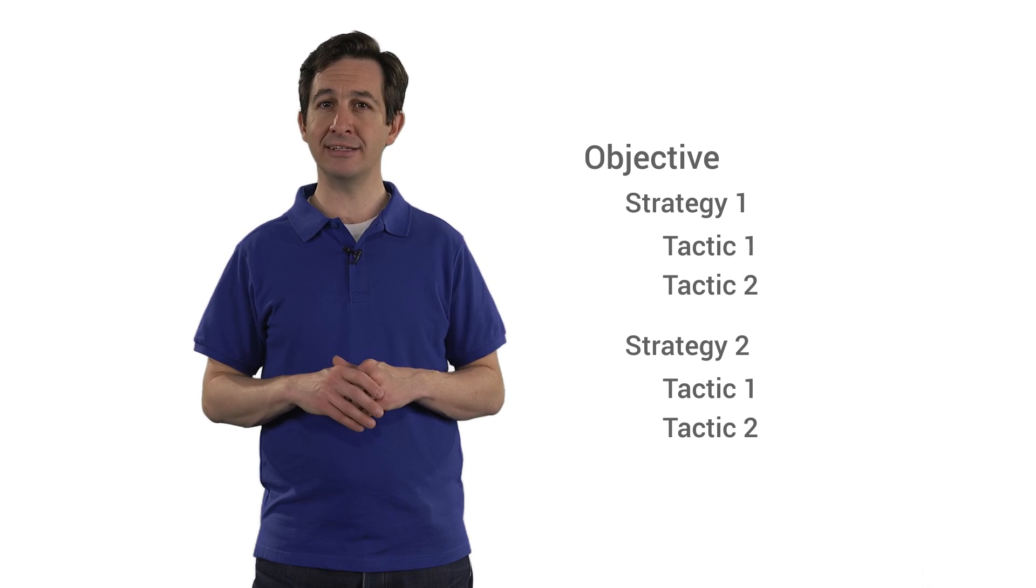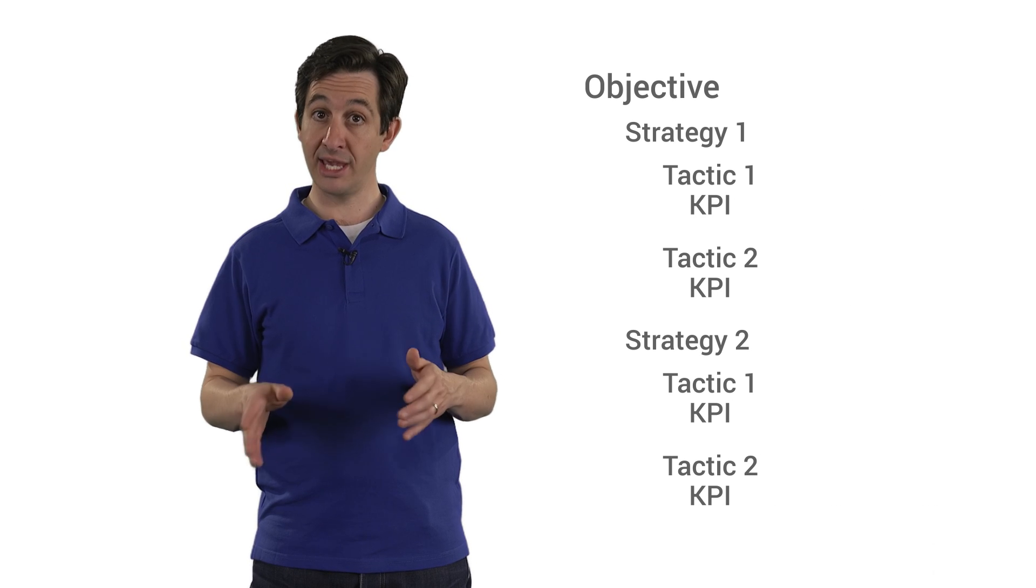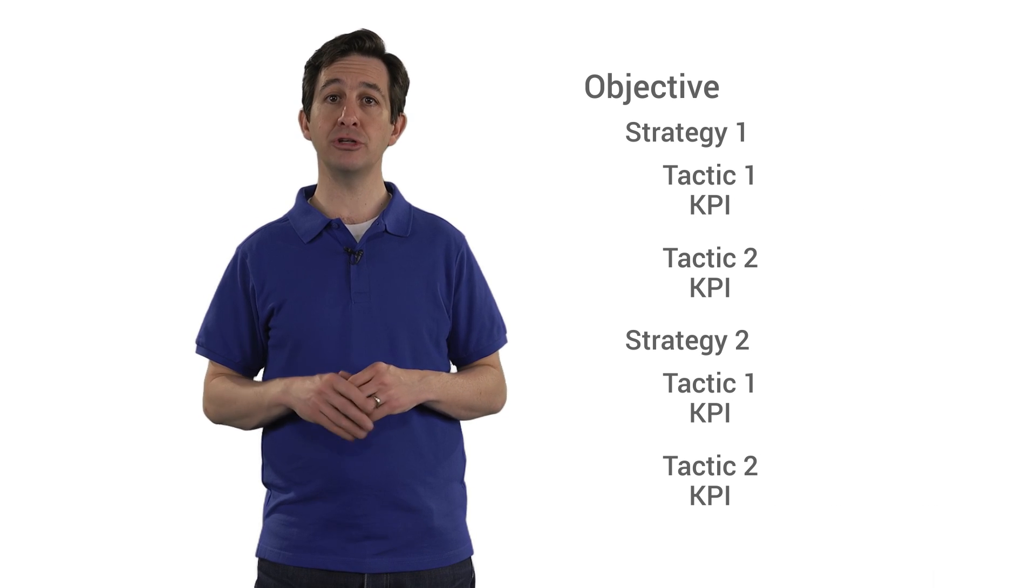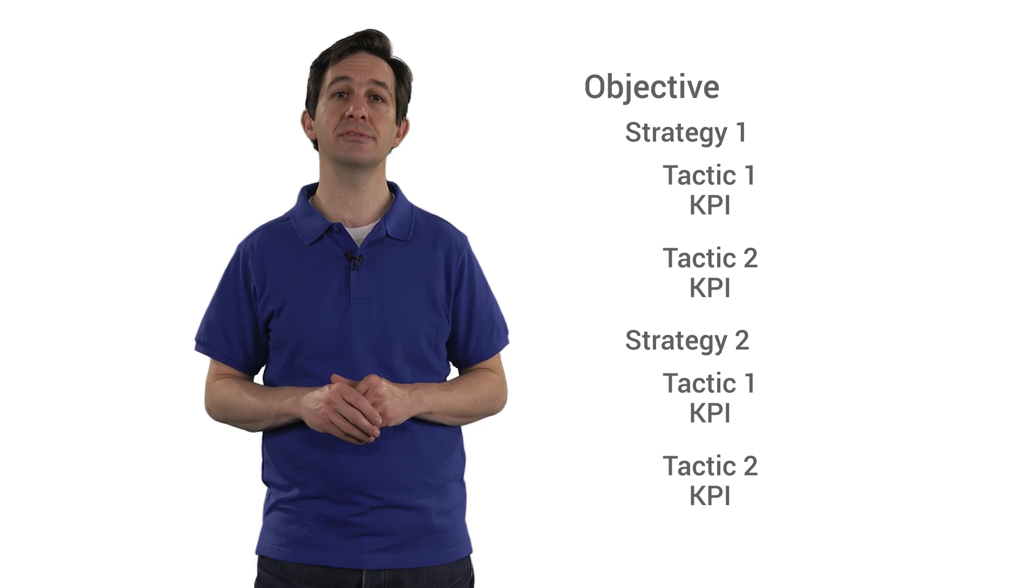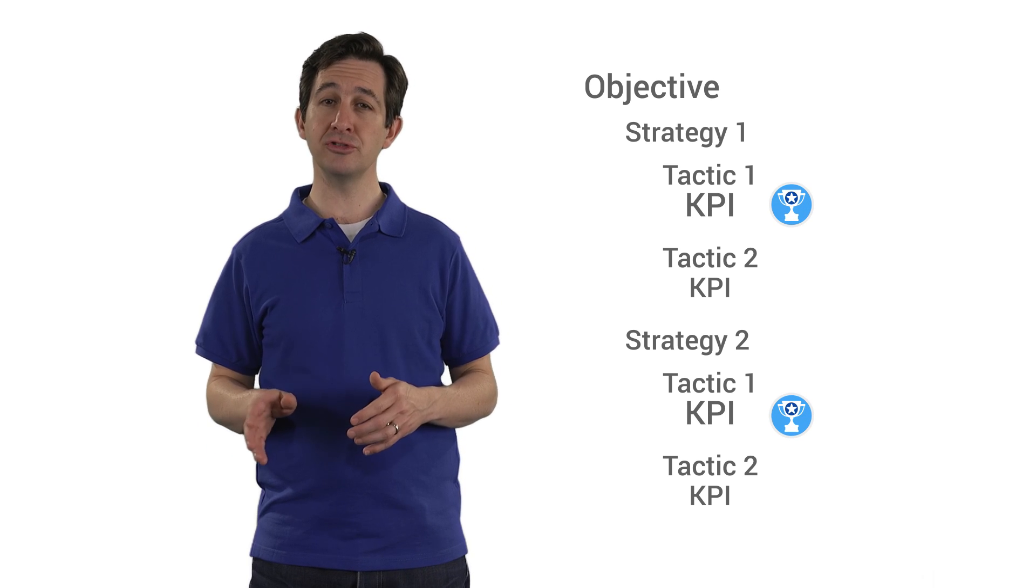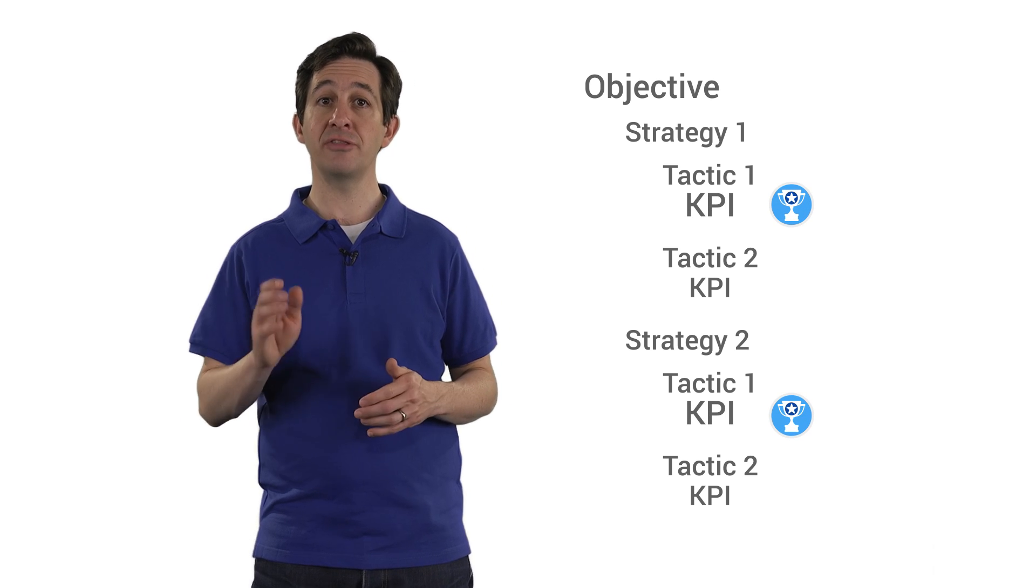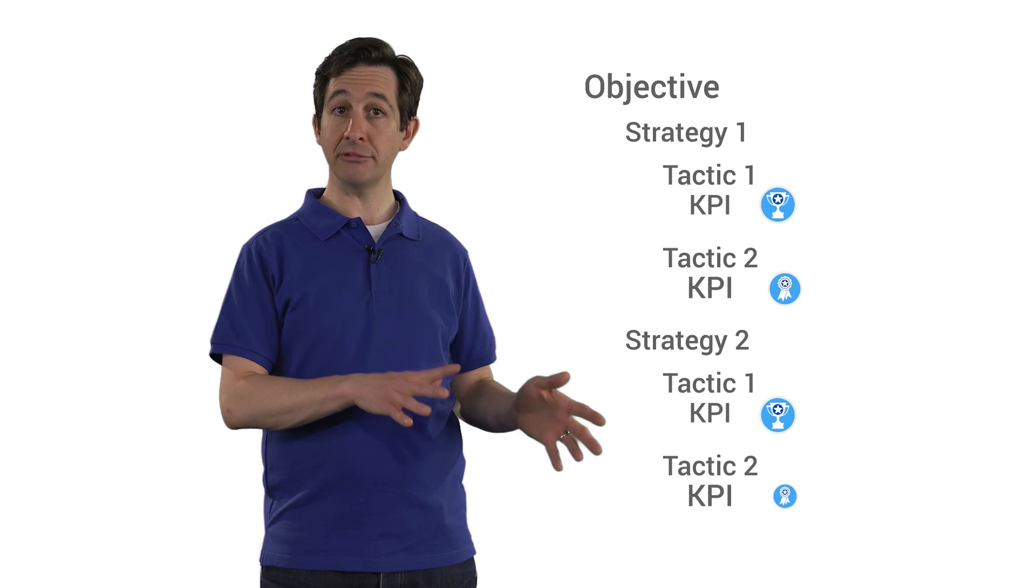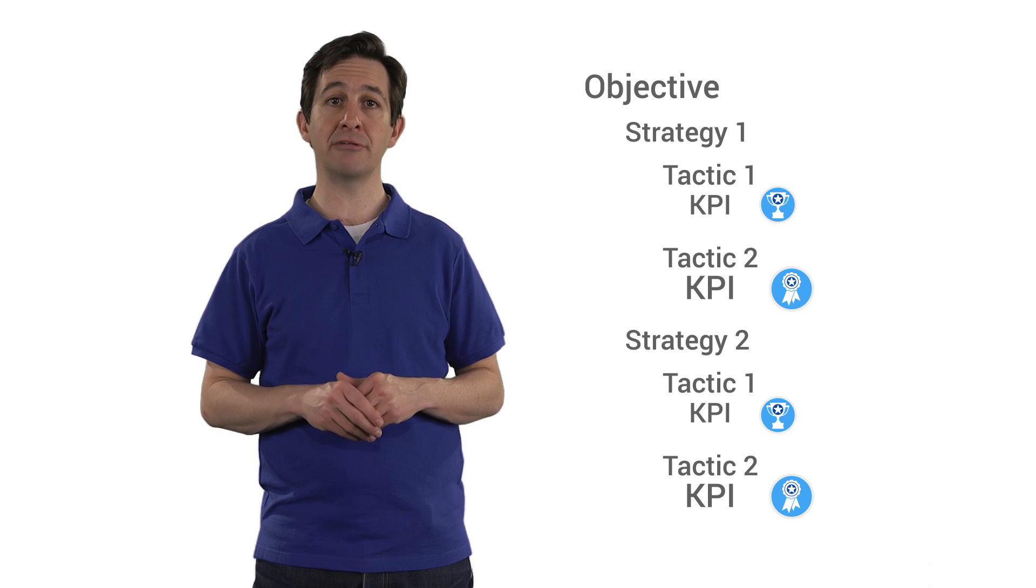Each tactic will have key performance indicators, or KPIs, that help you measure your macro or micro conversions. Macro conversions usually measure the tactics that support your various strategies. Micro conversions are metrics that help you better understand the user behavior that leads to macro conversions.